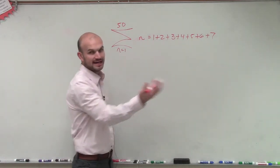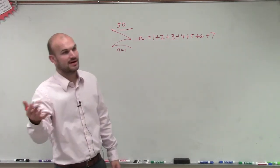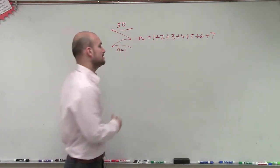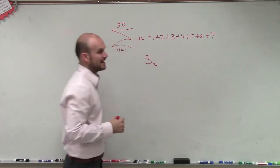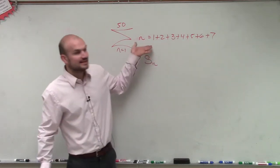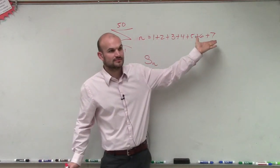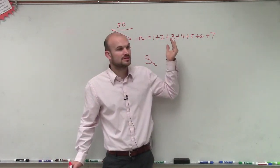The first formula was a sub n equals a sub 1 plus n minus 1 times d, right? The second was the sum of n. Now we notice one thing, is this an arithmetic sequence? Is the difference between each one of these terms the same?